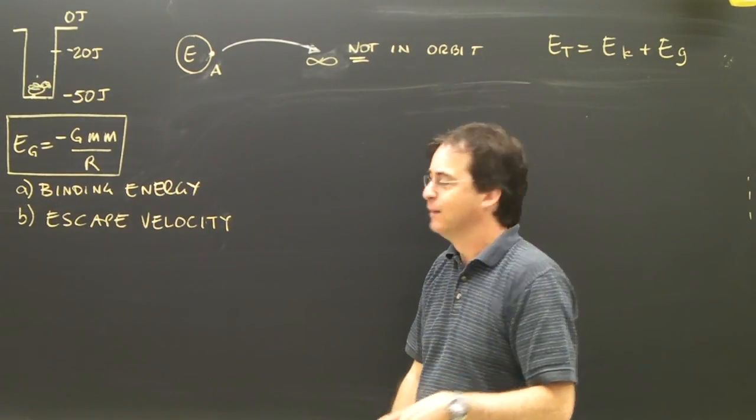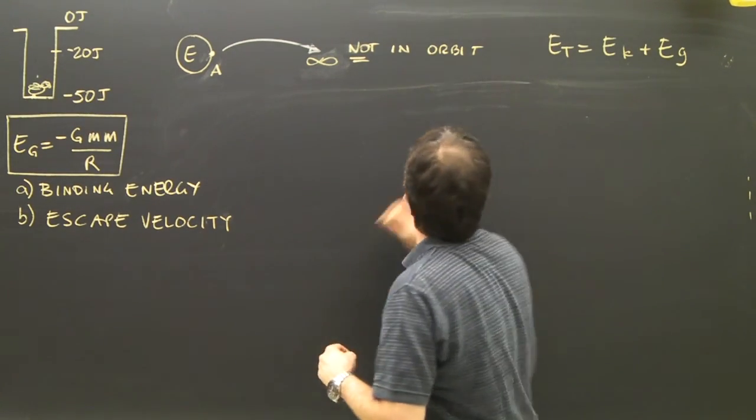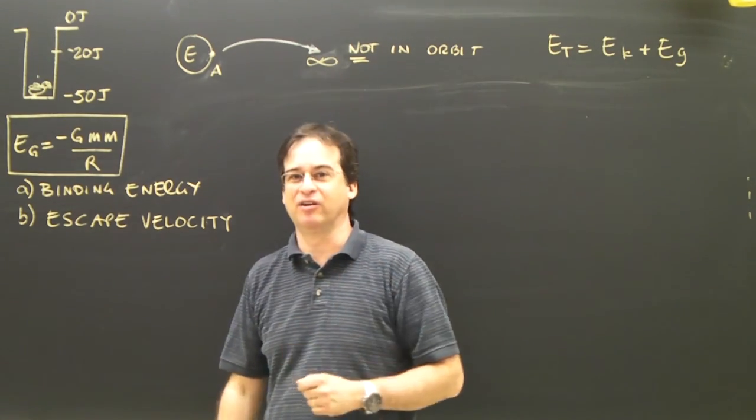If it's in orbit, it's going to be different, because when it's in orbit it has kinetic energy, which means my total energy formula, which is kinetic plus gravity, has kinetic and gravity.